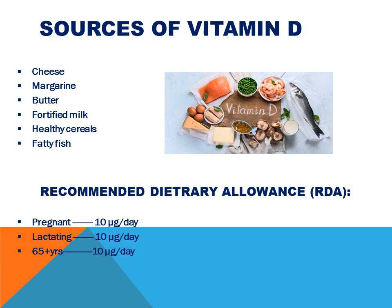Sources of Vitamin D: sunlight is a very important and cheap source of Vitamin D. When the body is exposed to the ultraviolet rays of the sun, a substance under the skin called dehydrocholesterol is converted to cholecalciferol, which is stored in the liver and used whenever it is required. Other sources include cheese, margarine, butter, fortified milk, healthy cereals, and fatty fish.